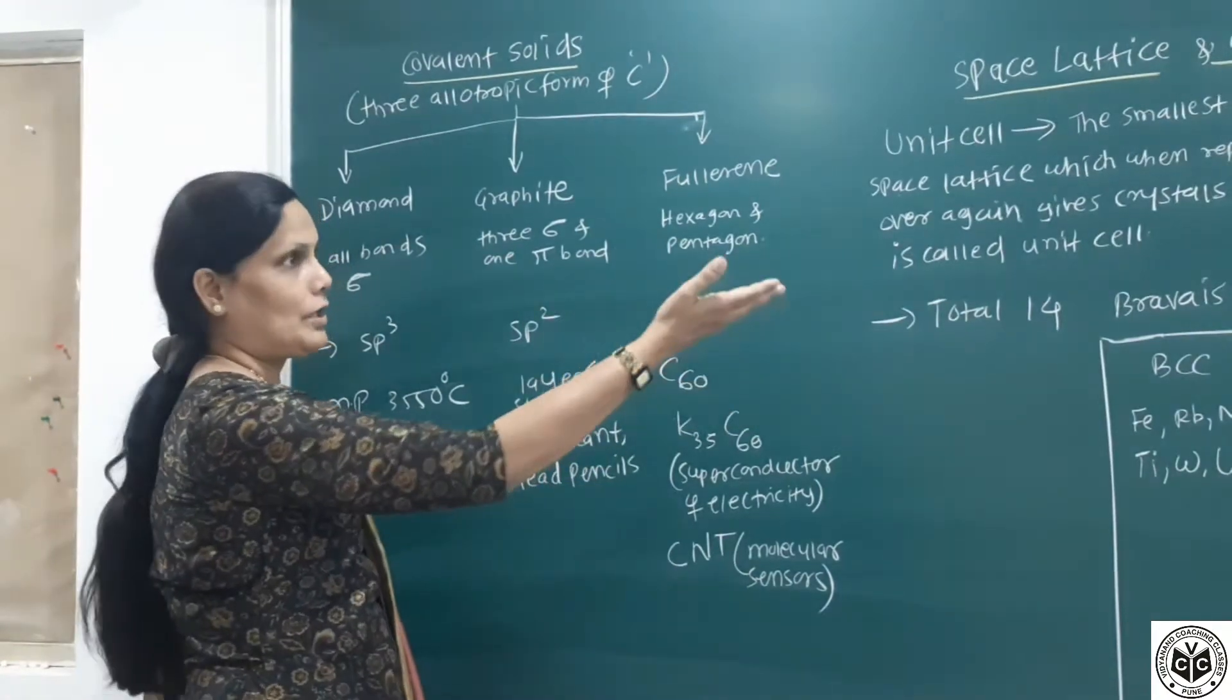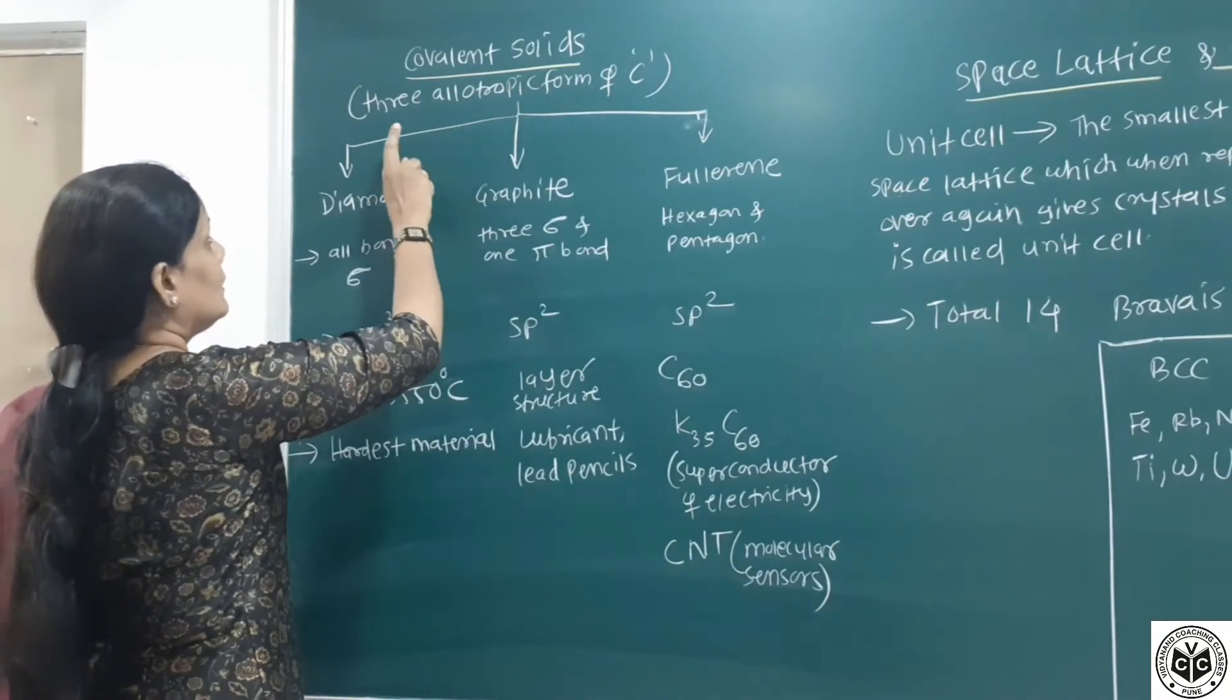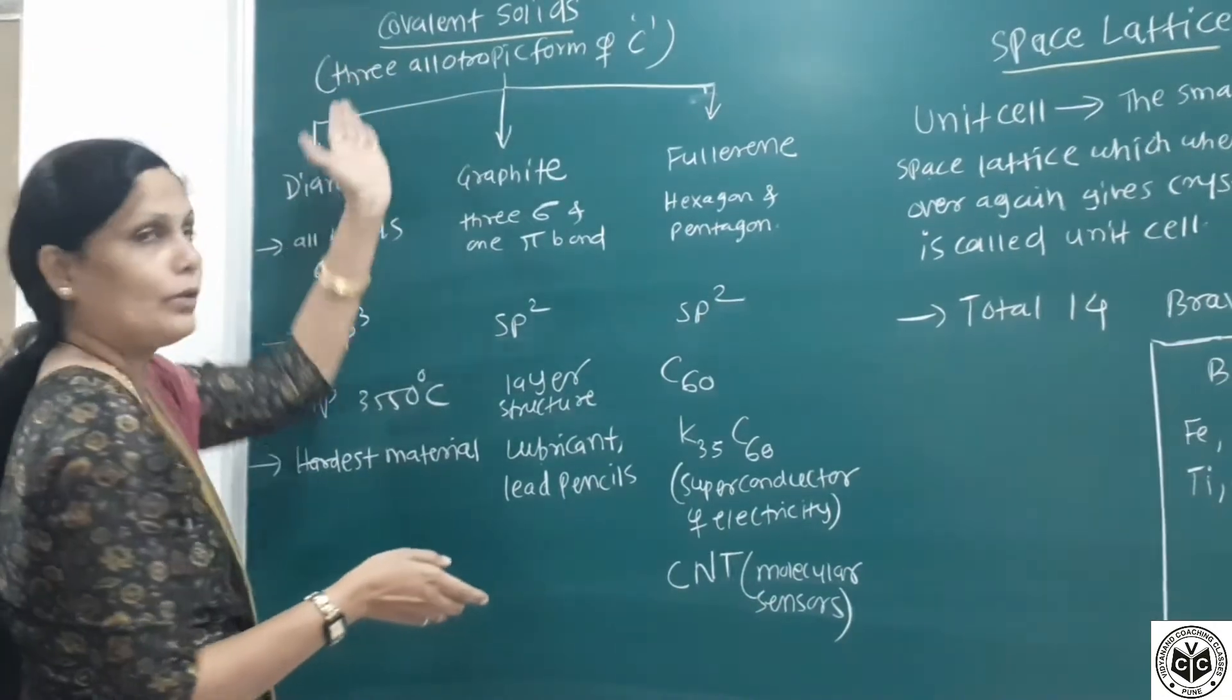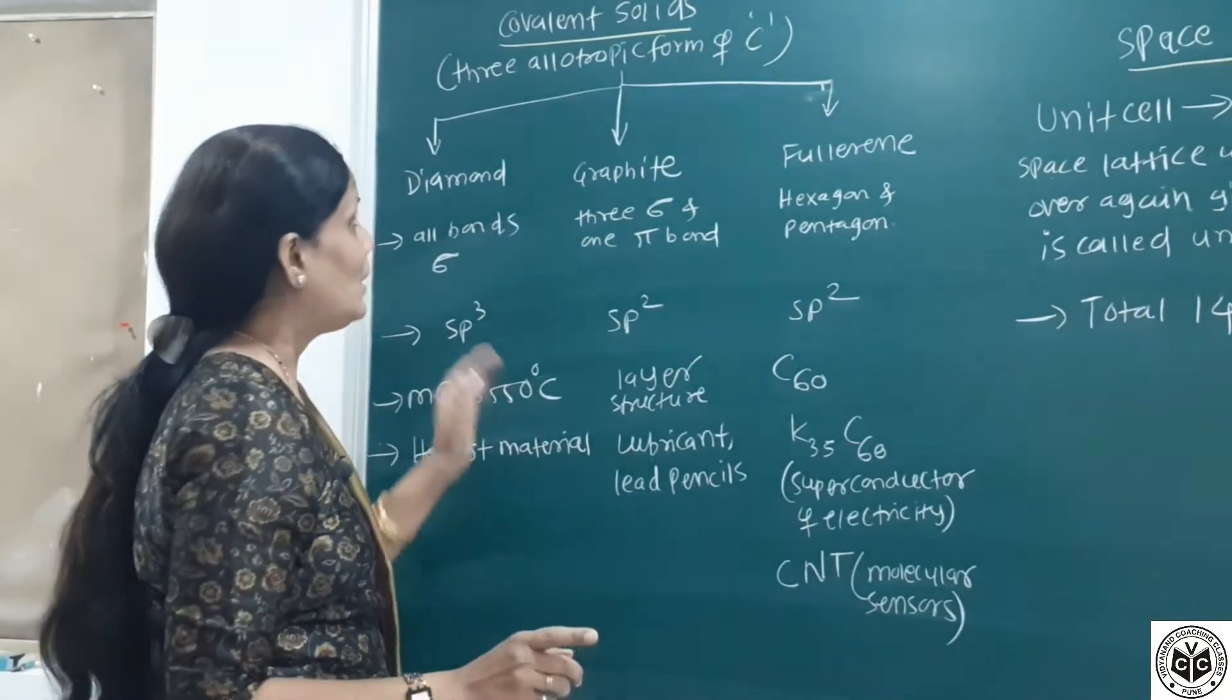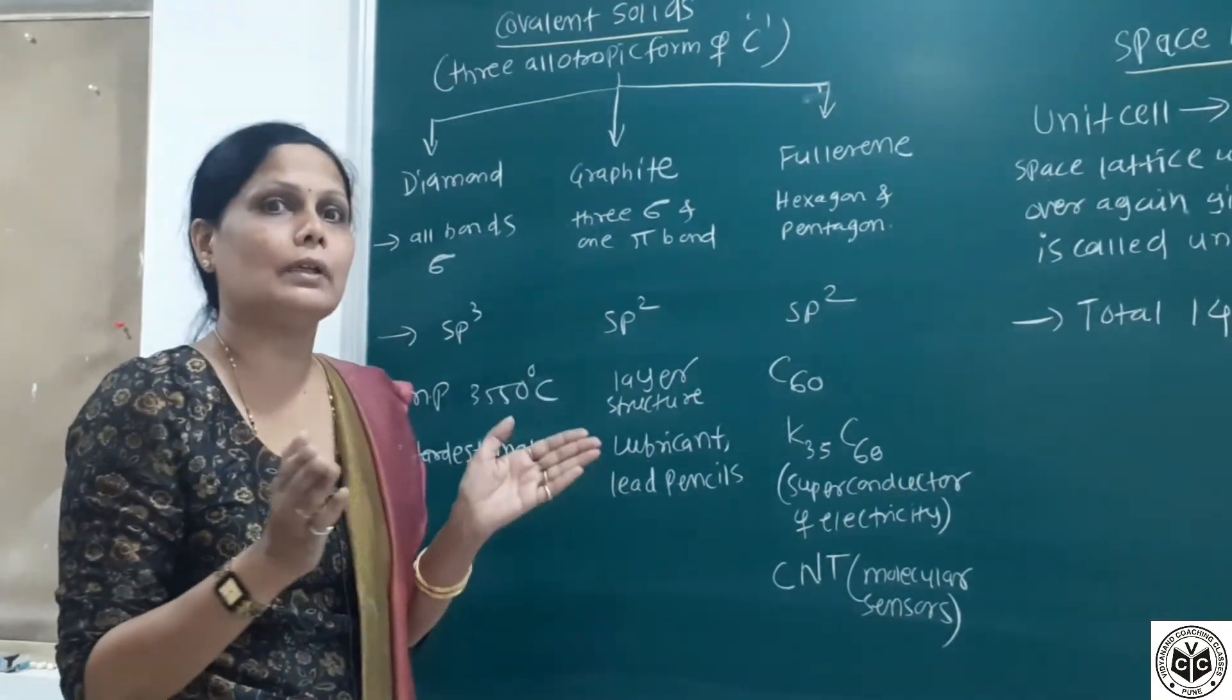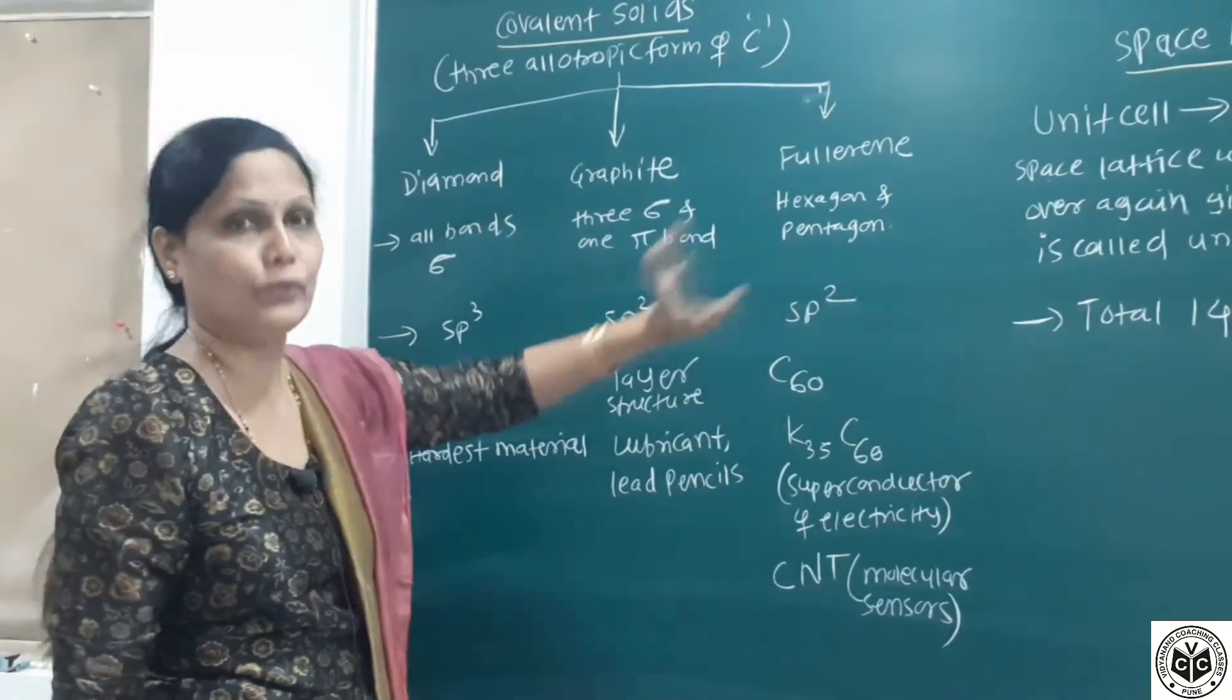We have finished classification of crystalline solids. For covalent solids, there are three allotropic forms of carbon. We will see the properties of these three allotropic forms. Allotropy means the same element crystallizes into different structural forms. Carbon has three allotropes: diamond, graphite, and fullerene.